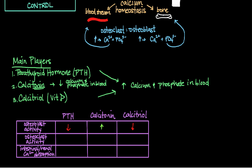Osteoclast activity is basically the opposite of osteoblast activity, because osteoclasts break down bone, taking calcium and phosphate and putting it back into the bloodstream. Parathyroid hormone stimulates this process, so its effect on osteoclast activity is to increase it. Likewise, calcitriol increases osteoclast activity. Calcitonin, because it decreases calcium and phosphate being put into the bloodstream, decreases osteoclast activity.